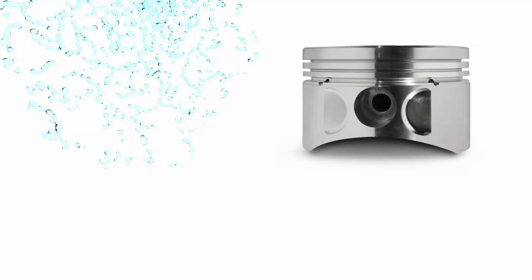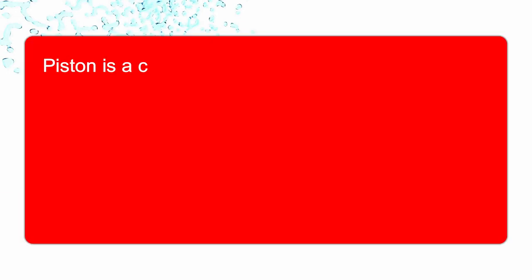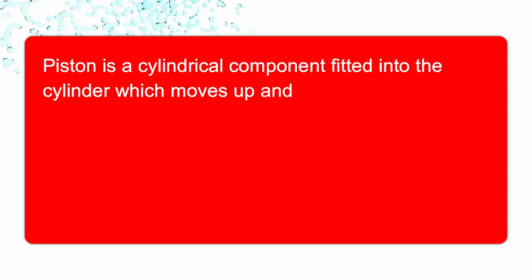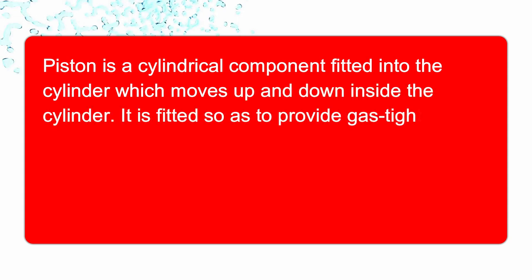So our second component is piston. Piston is a cylindrical component fitted into the cylinder which moves up and down inside the cylinder. It is fitted so as to provide gas tight space with the piston rings and the lubricant.